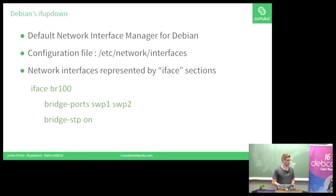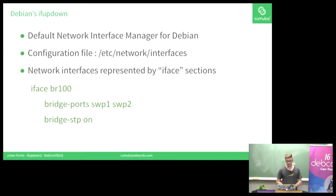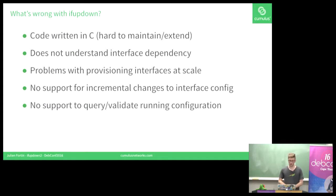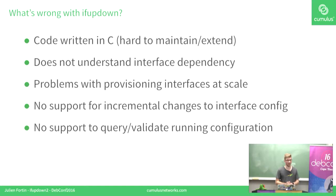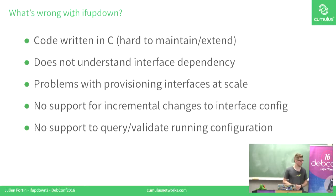You may know about IfUpDown — it's the default network manager for Debian. You can configure your network in a static file, /etc/network/interfaces, and the networking interfaces are represented by iface sections. So what is wrong about it? First, it's written in C, so it's really hard to maintain or to extend. Second, IfUpDown doesn't understand interface dependencies. The complexity increases with a large number of interfaces — you have to keep the file ordered so that dependencies are respected.